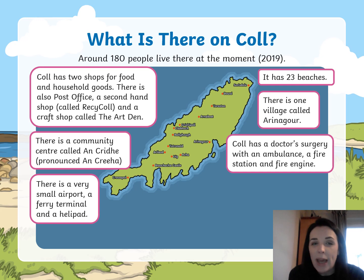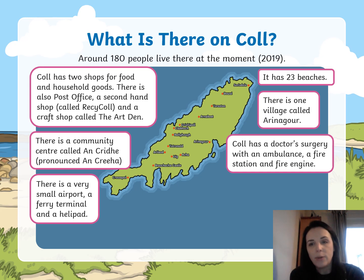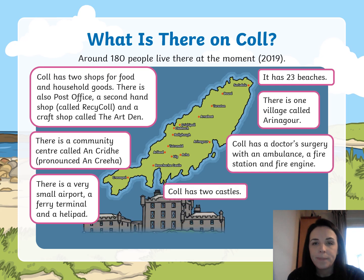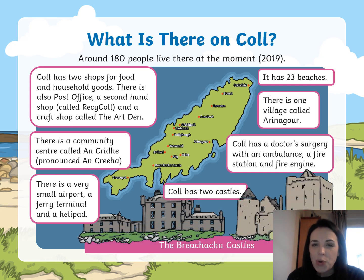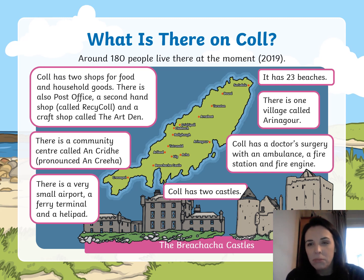There's a very small airport and a ferry terminal — that's where the ferry comes in and loads its passengers. And a helipad, which is where a helicopter would land. It has two castles — strange for somewhere so small that only has one airport to have two castles. I wonder where those would be.